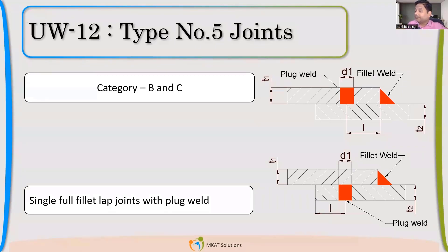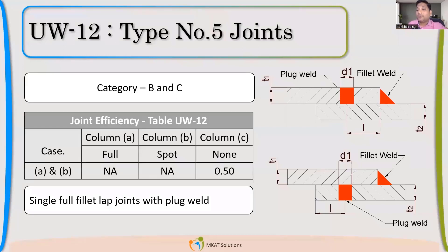Type number 5, 6, and 7 are plug-welded or attachment-type joints. We generally never use these for pressure vessel shells, but the code says we can still use them for attachments. For all of these joint types — 5, 6, and 7 — joint efficiency will not improve even if I do radiography. So radiography becomes meaningless after type number 1 and type number 2.